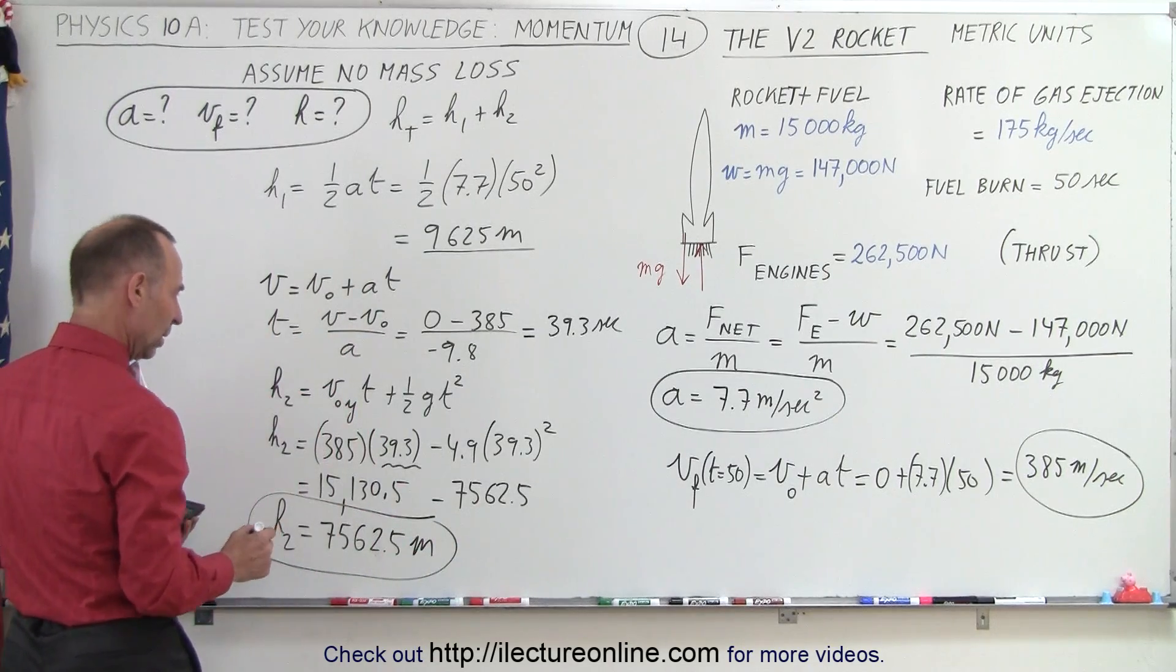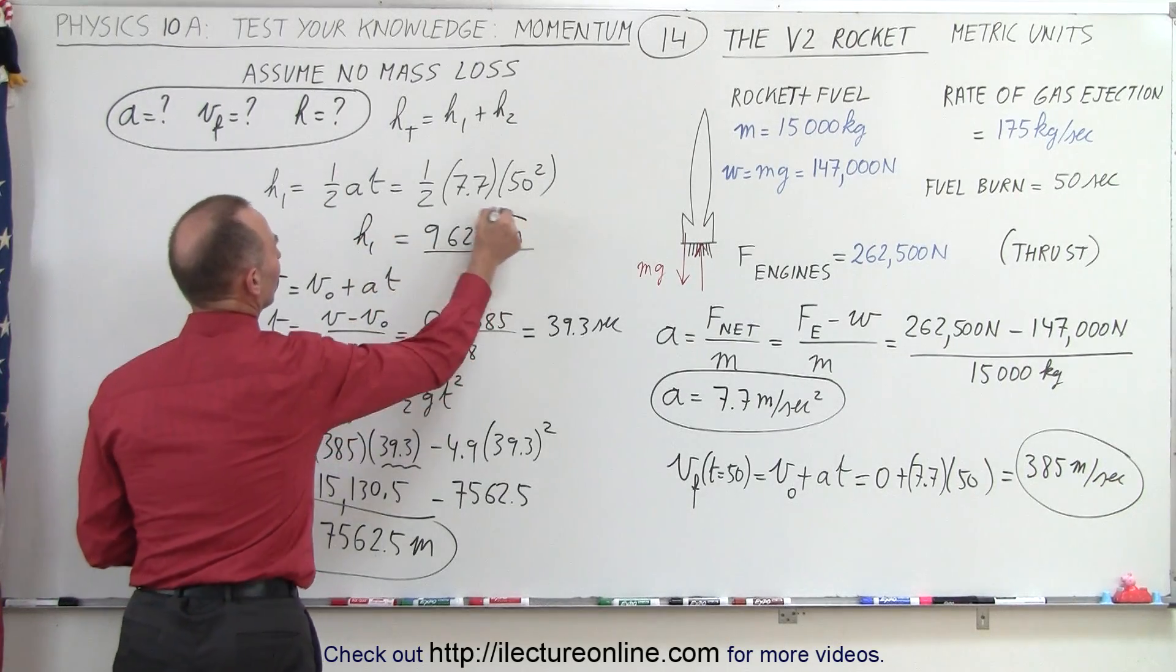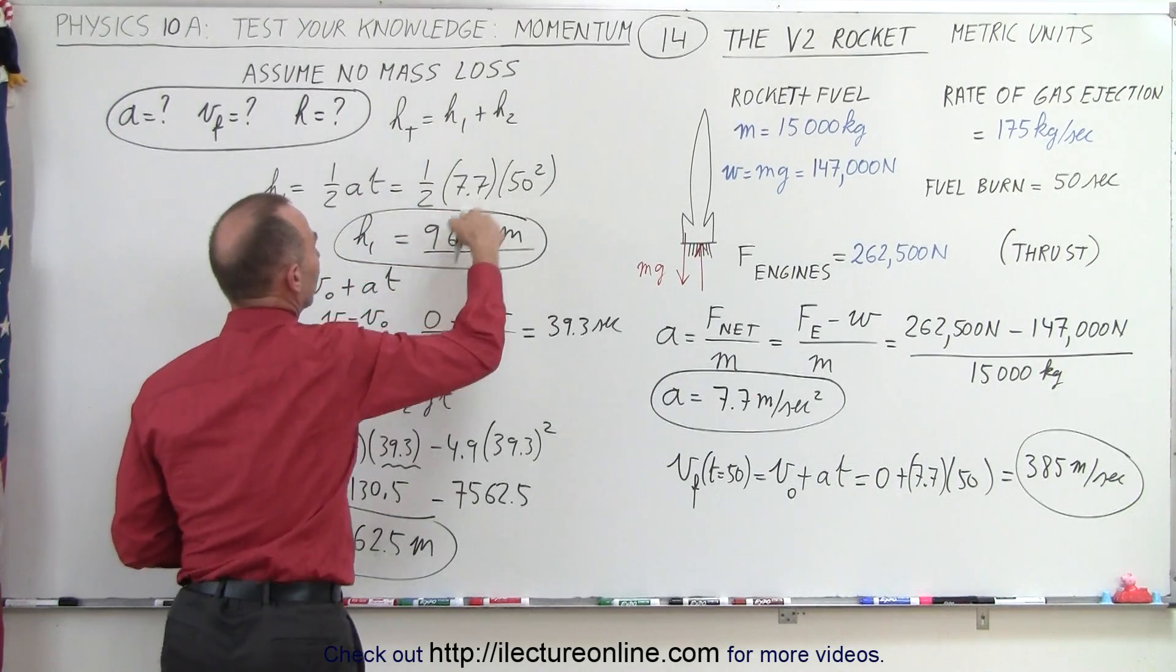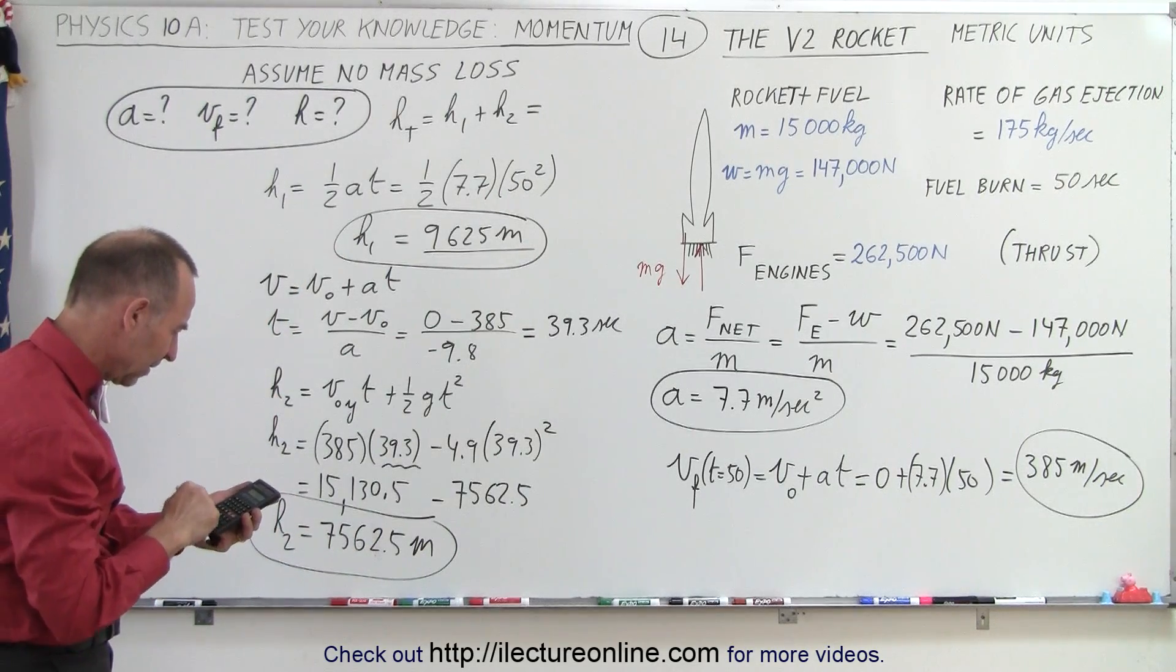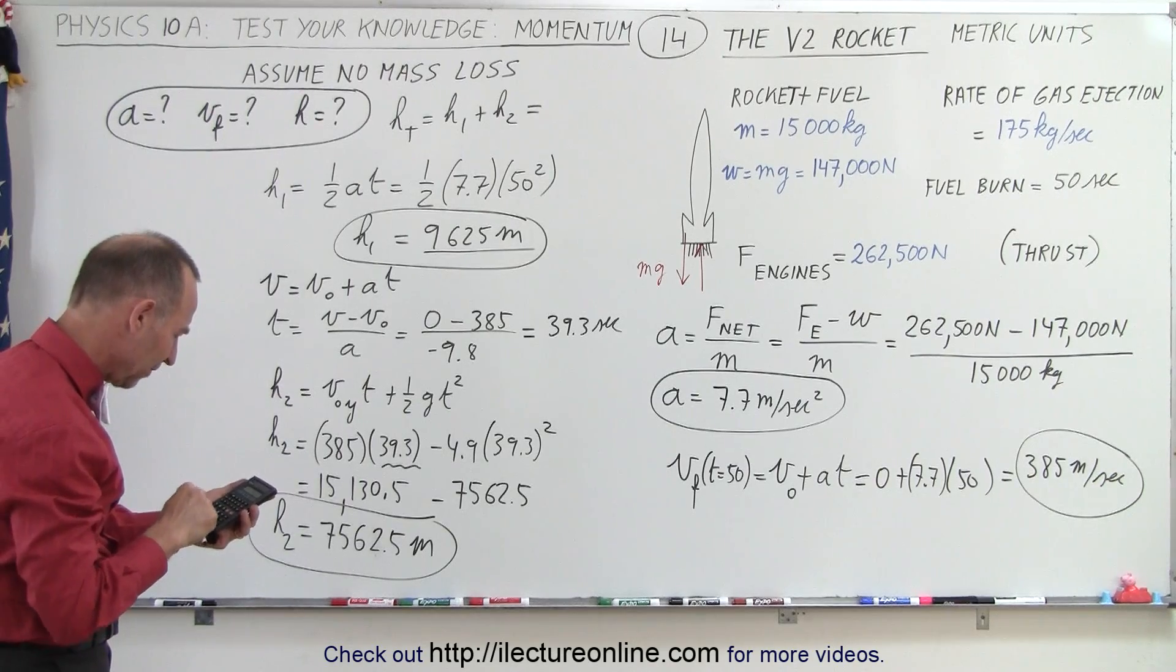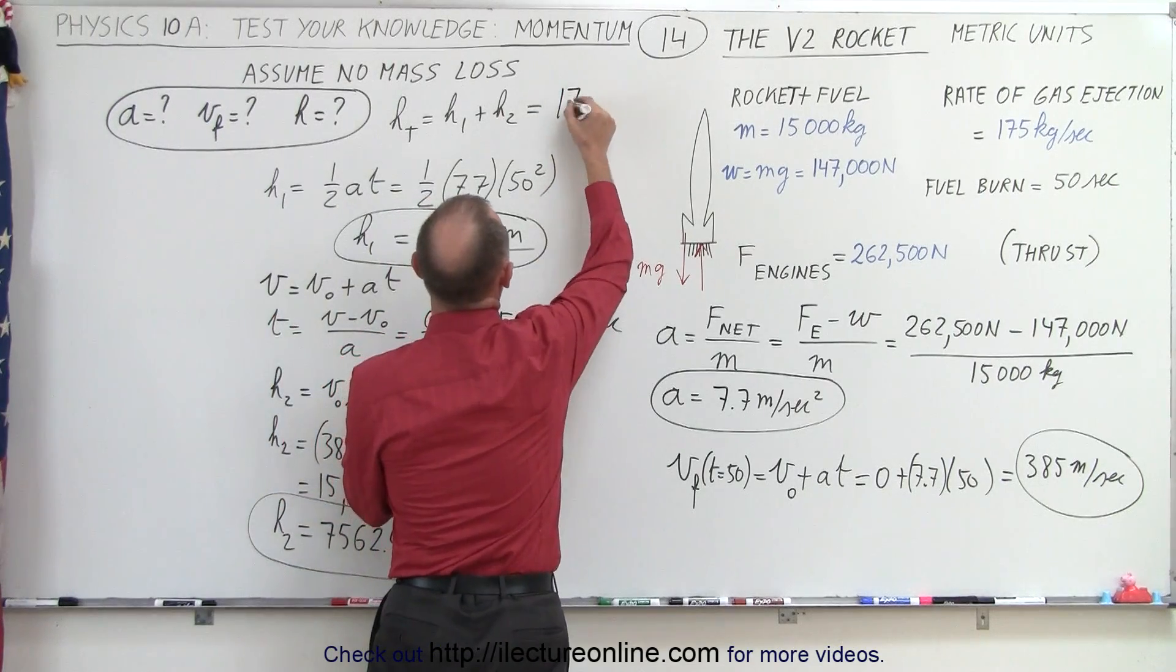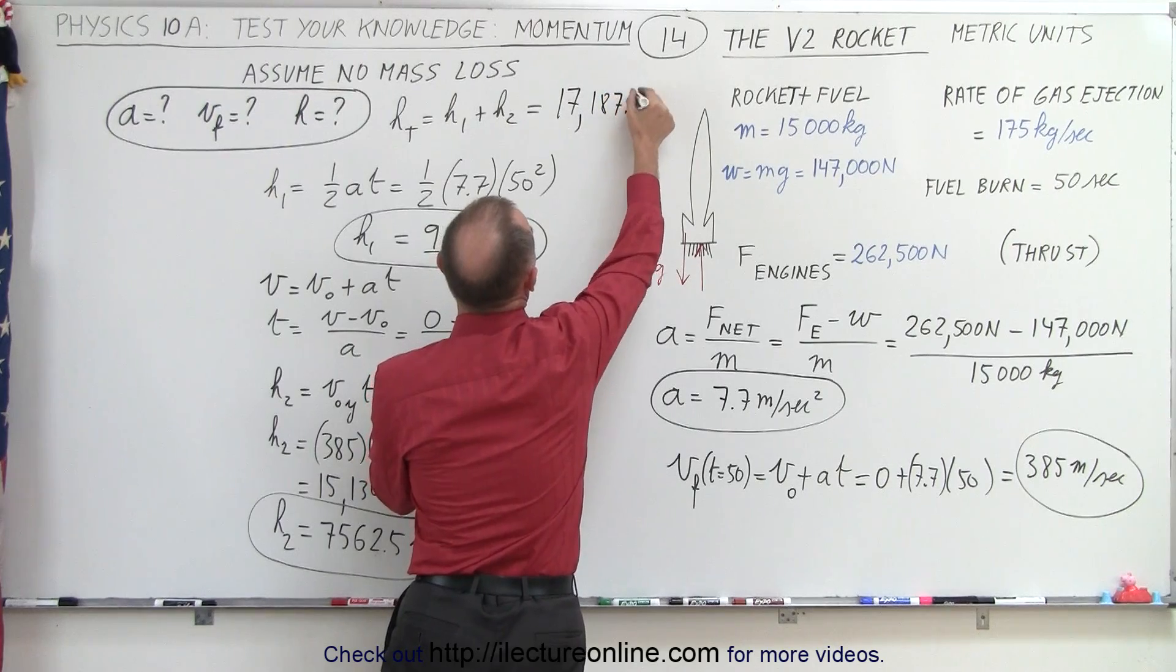So if we add H1, where's H1? I lost my H1. There it is, H1. So if we take H1 and we add it to H2, that gives us the final height. So that would be the two together. So let's go ahead and do that. So we have 7,562.5, add it to 9,625, and we get a total height of 17,187.5 meters.